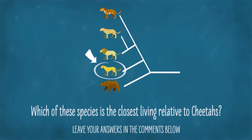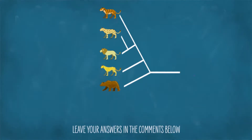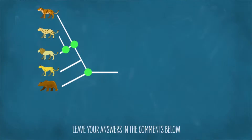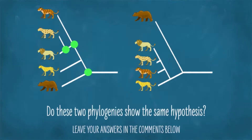Second, if I were to flip all of these nodes resulting in this phylogeny, does it depict the same hypothesis about the relationships between these organisms, or a different hypothesis? Again, please answer in the comments, and let's make sure we've all got this.